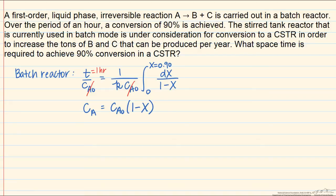We can say that the batch time is equal to 1 over k, which we can pull outside of the integral. The batch time is going to be an hour. We can do this integral, and integrating the expression dx over 1 minus x from the limits from 0 to 0.9 gives us the natural log of 1 over 1 minus 0.9. T is equal to 1 hour, and so now we can solve for the reaction rate constant k, and we find that it's equal to 2.3 reciprocal hours.